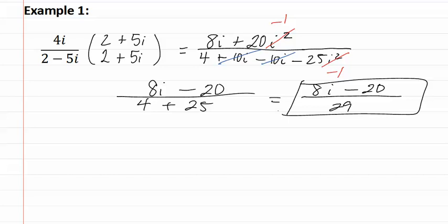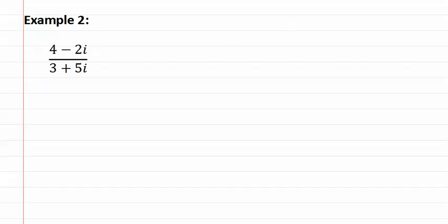Let's look at example two. Here is example two. Once again, we will need to multiply by the conjugate, or three minus five i, in both the numerator and the denominator.